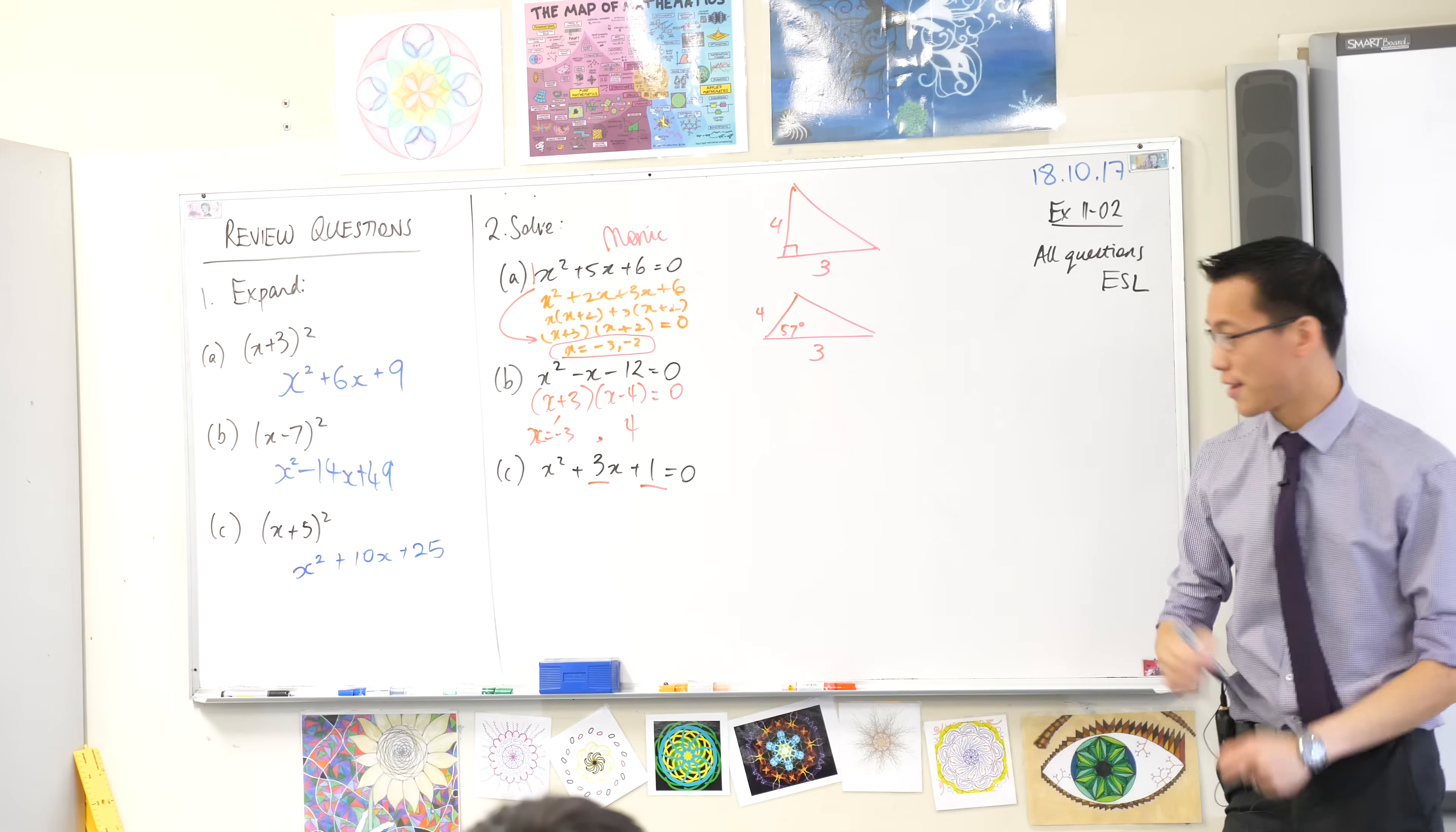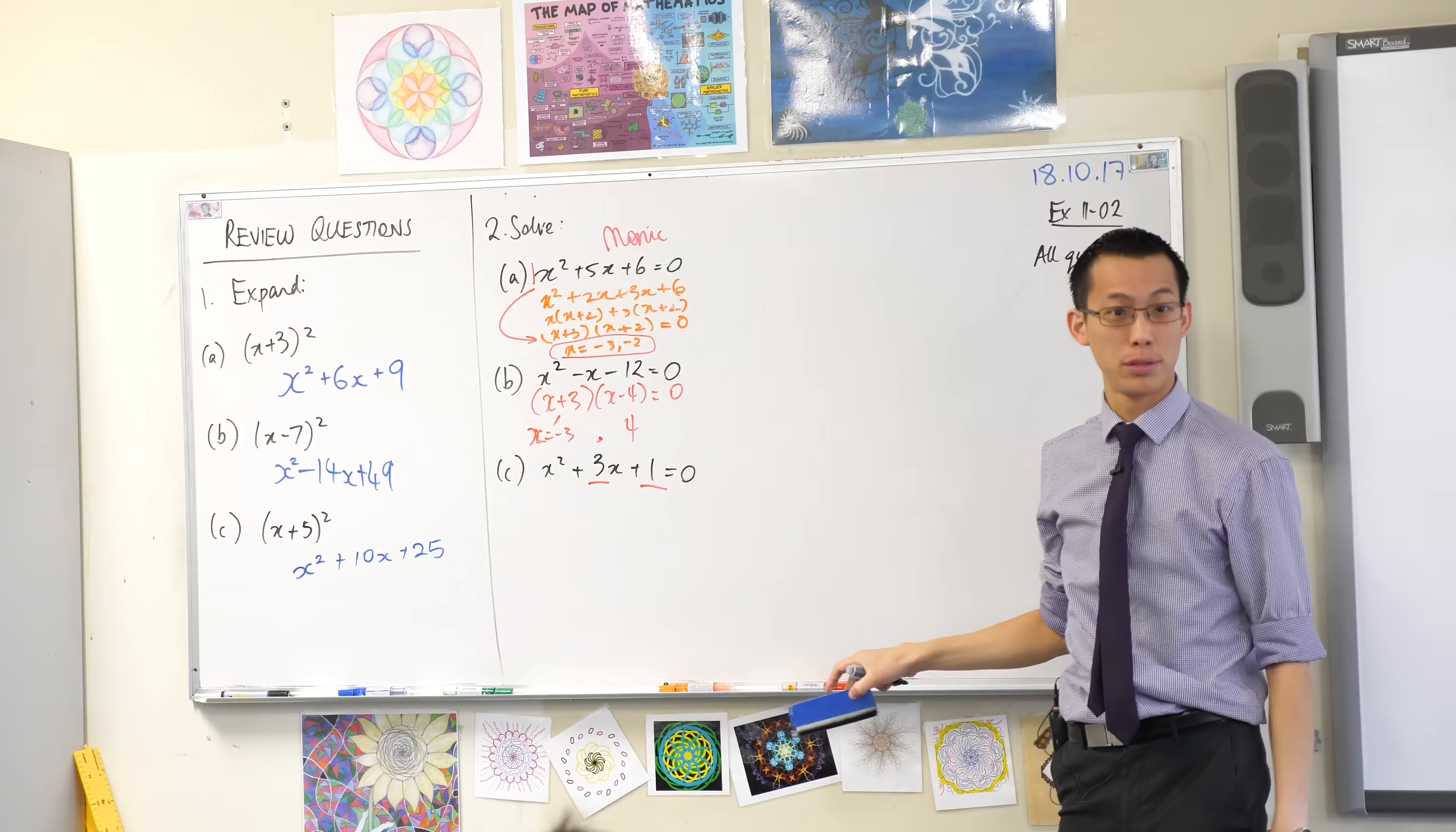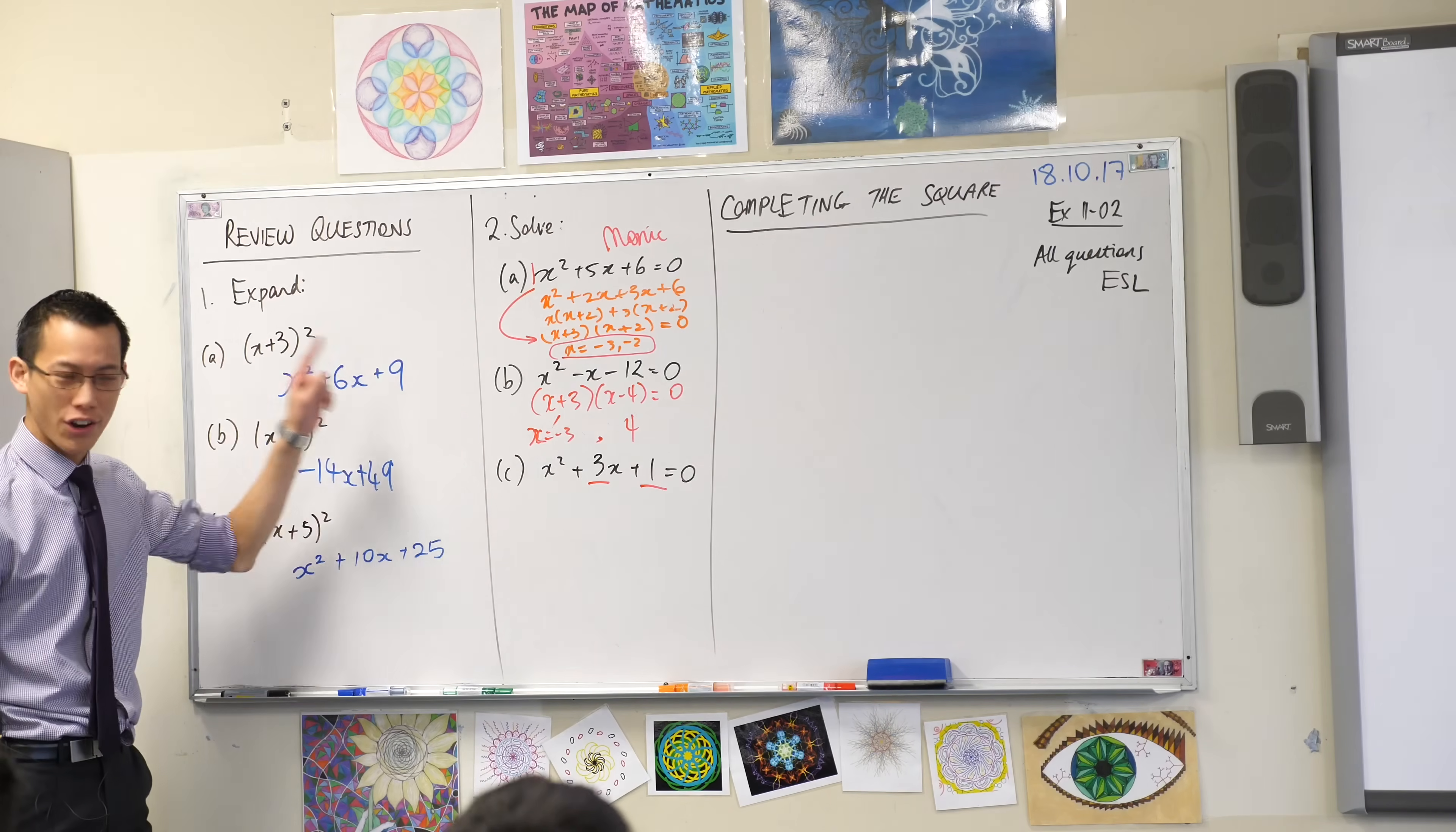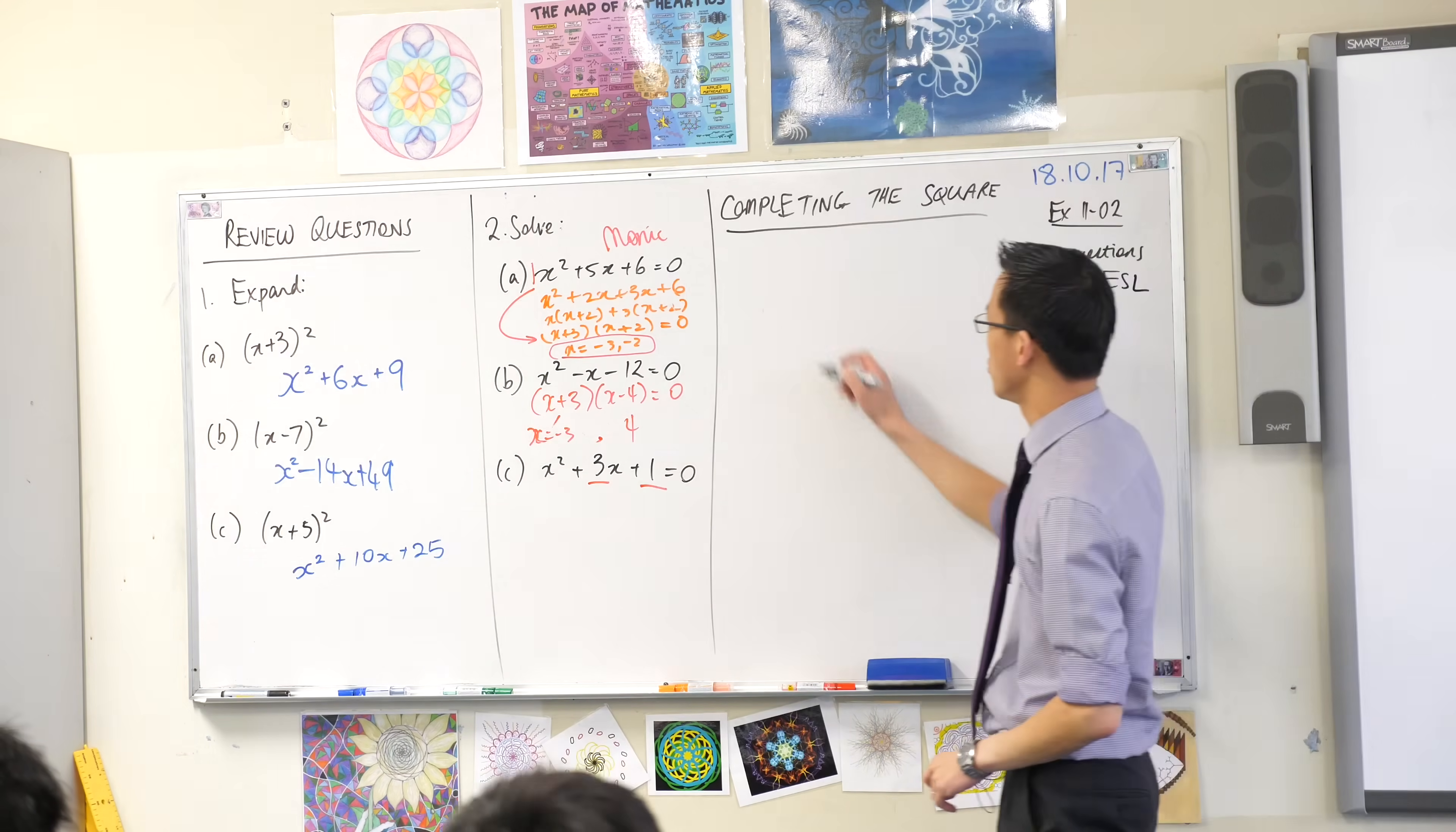I want you to make a heading for me, and I need to keep this stuff on the board, so pardon me if it's a little bit cramped. The heading I'd like you to make underneath review questions is completing the square. Now, I promise this heading will make sense in a minute as soon as we start to have a go at these questions over here. I'm going to hijack those questions at the beginning,